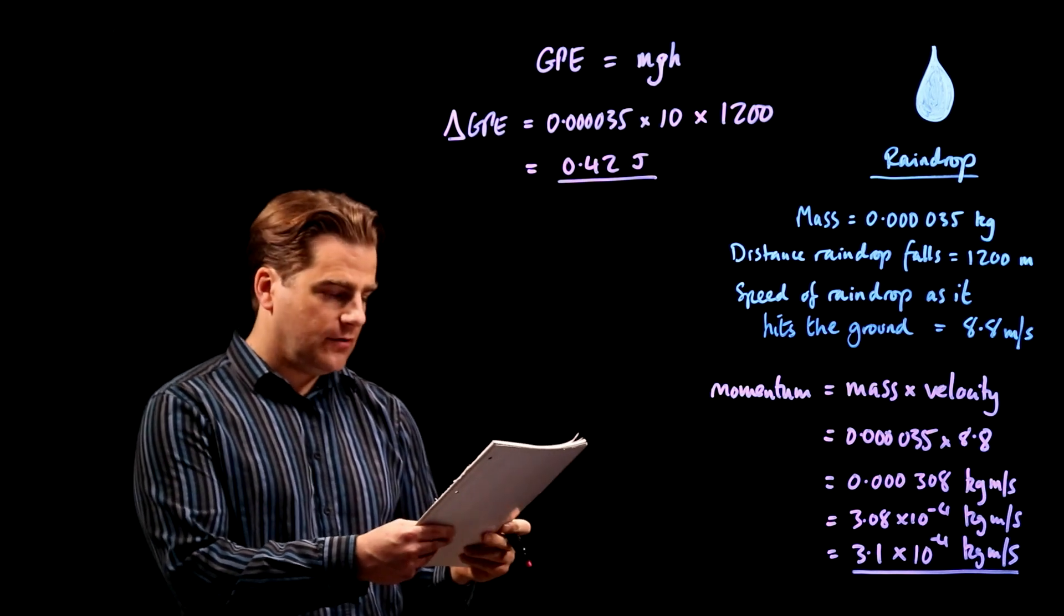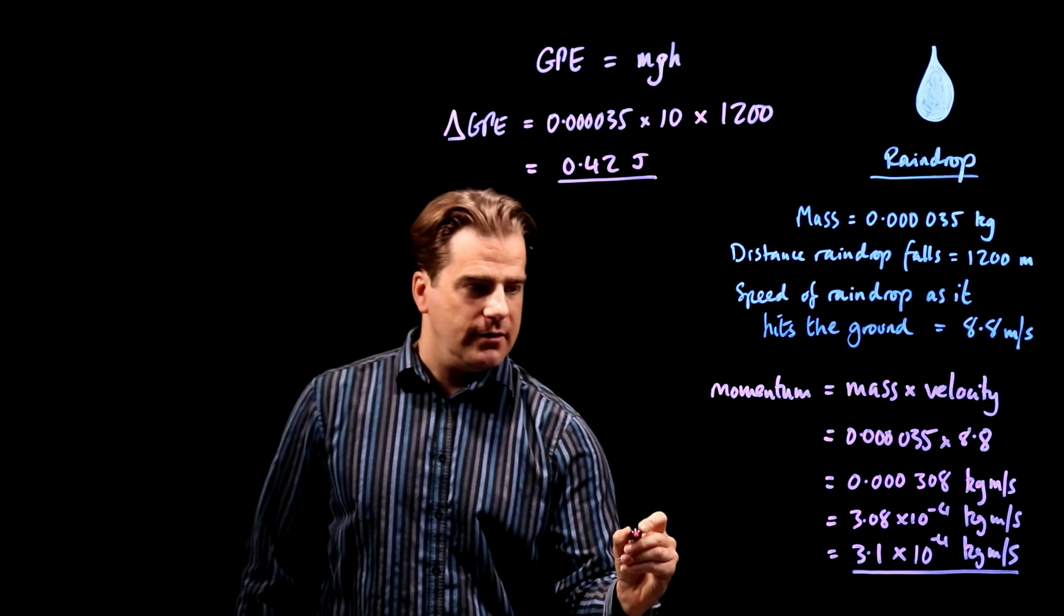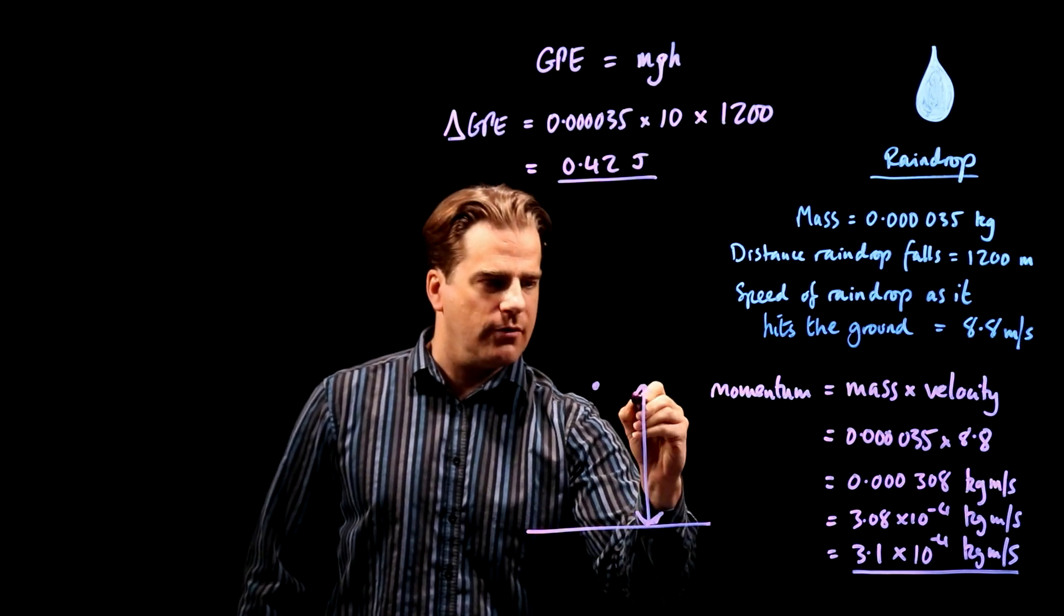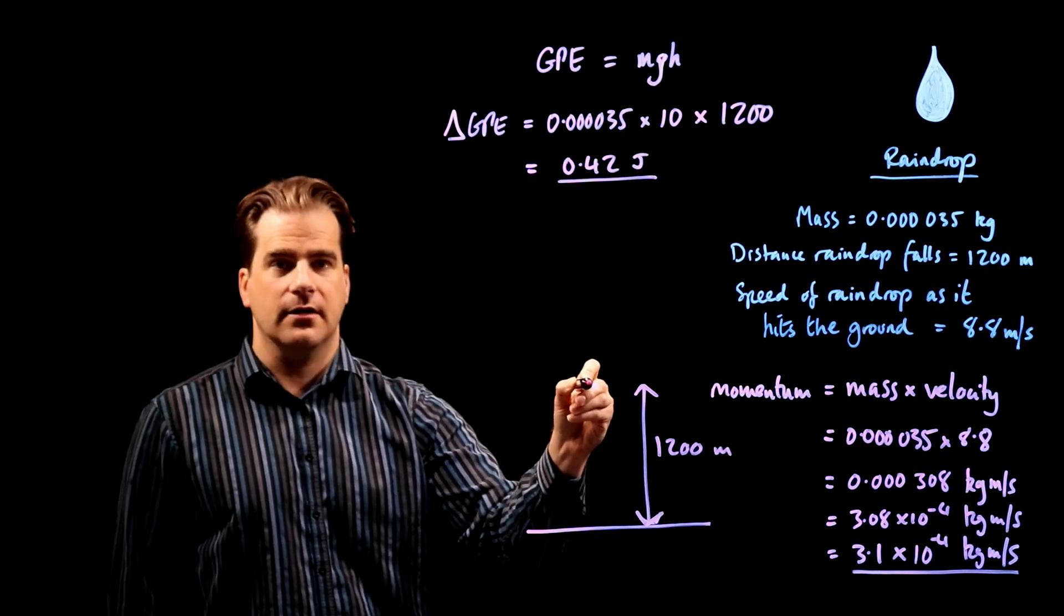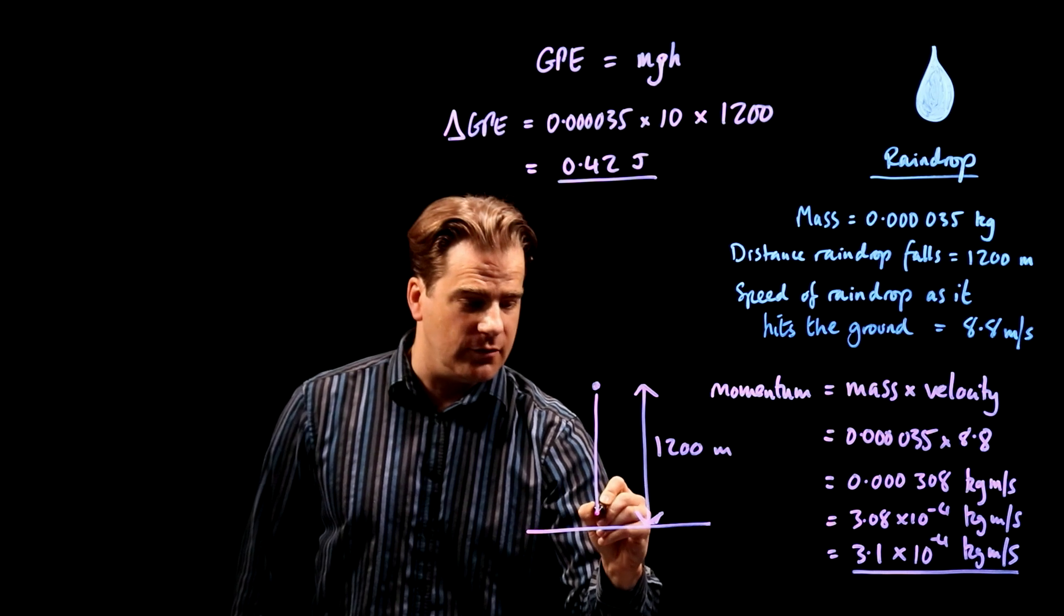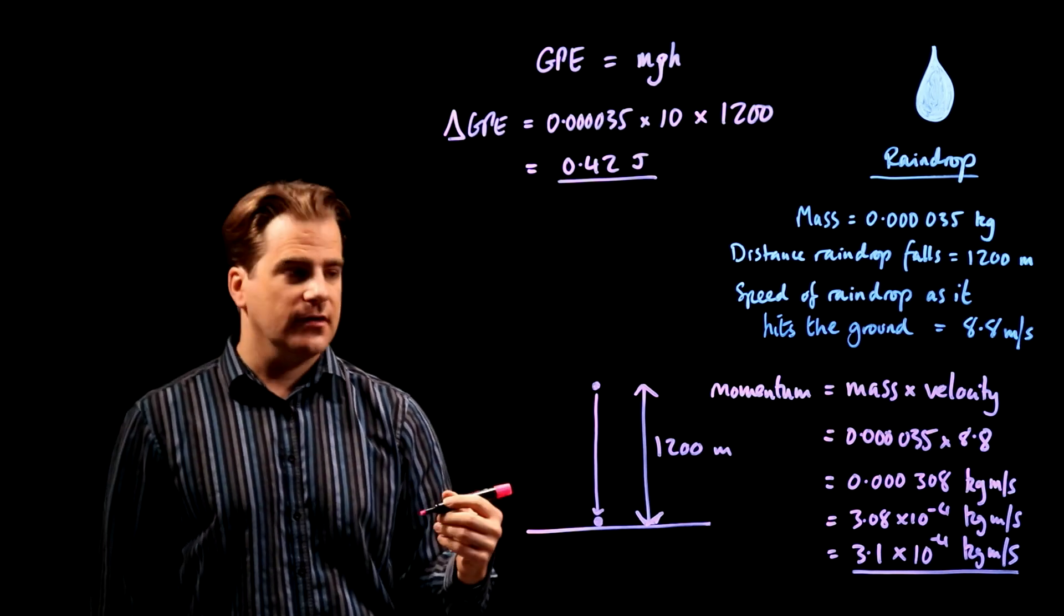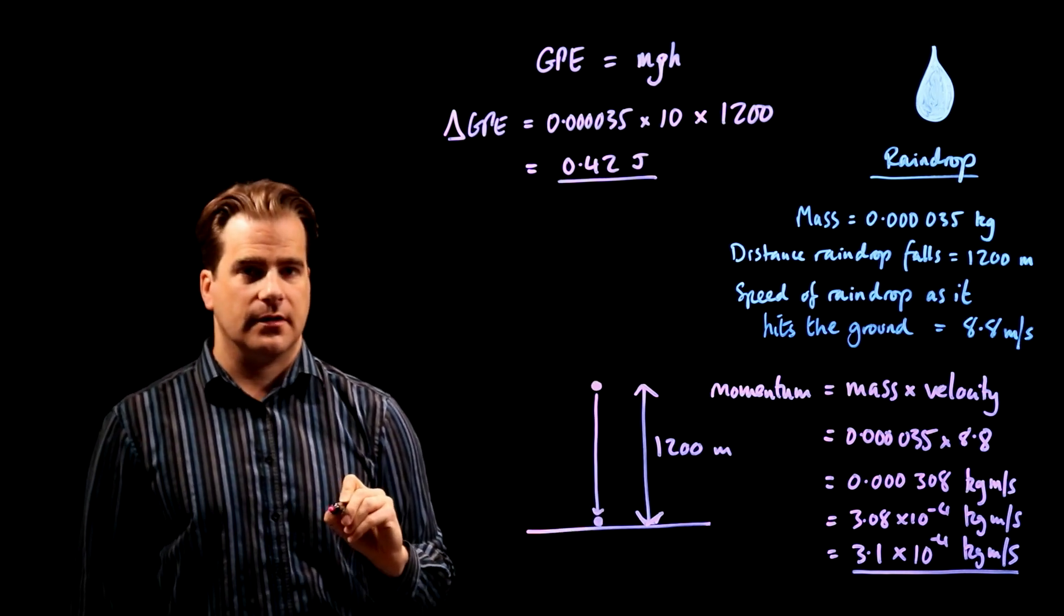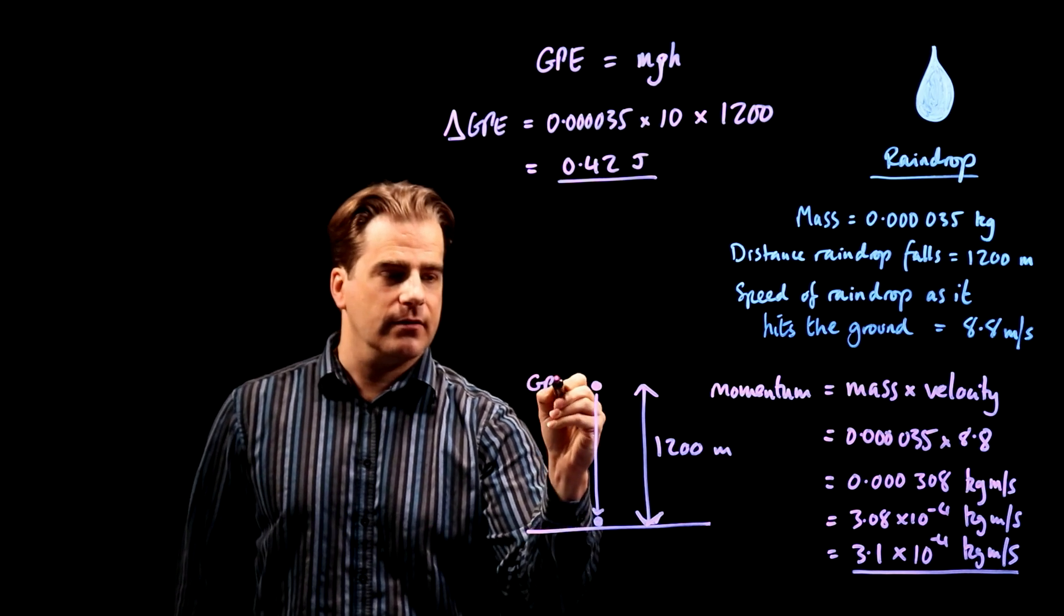State the kinetic energy of the raindrop as it hits the ground, assuming no energy losses. Okay. So, here's the ground, okay, and this raindrop started off 1,200 meters above the ground. So, we've worked out its gravitational potential energy there at the beginning of its journey. It's that, okay, and the question says, assuming no energy losses, it's the same because all of the gravitational potential energy is converted into kinetic energy.